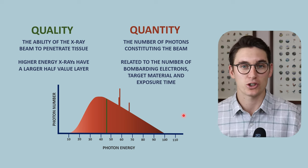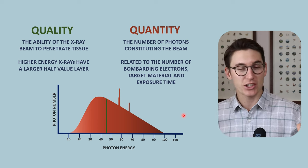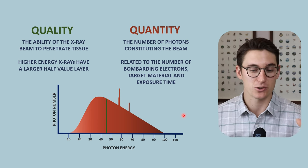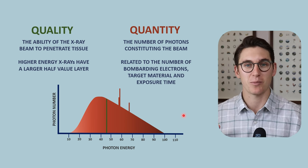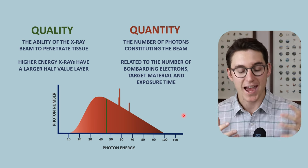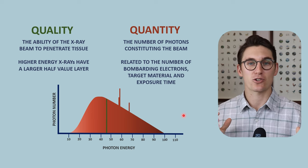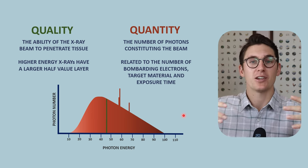We can manipulate the number of photons within the X-ray beam by changing the number of electrons that we accelerate towards our anode, by changing our target material - a higher atomic number will give us more X-rays - and we can expose the anode to electrons for a longer period of time, giving more X-rays.